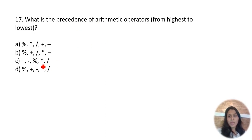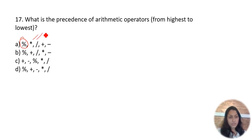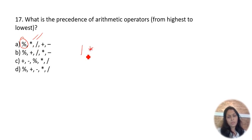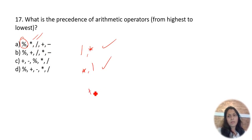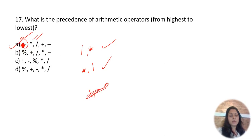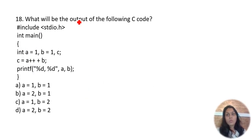What is the precedence of arithmetic operators from highest? Always remember: modulo (%) is highest precedence, next is multiplication (*), then division (/). Multiplication and division have the same precedence. Plus and minus also share the same precedence. Option A is the correct one.